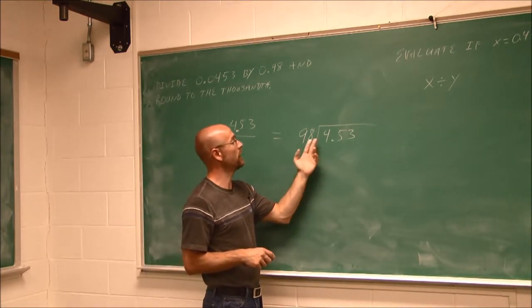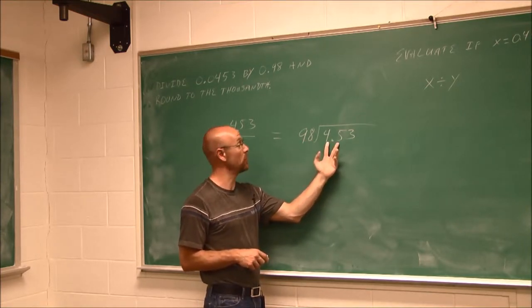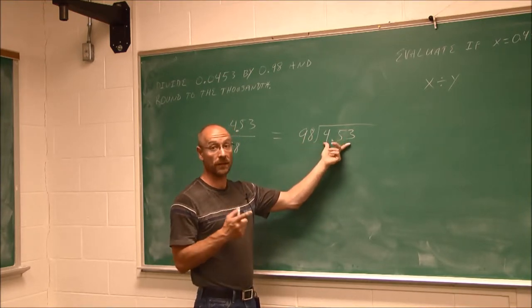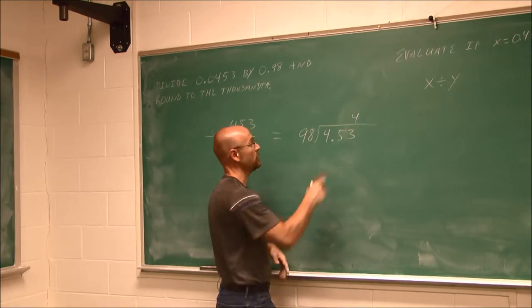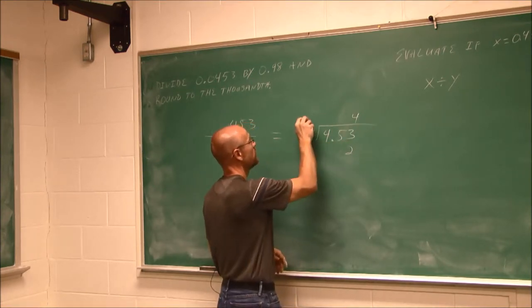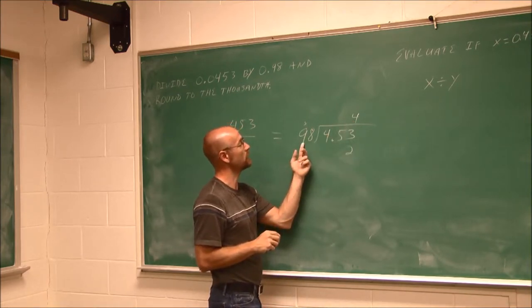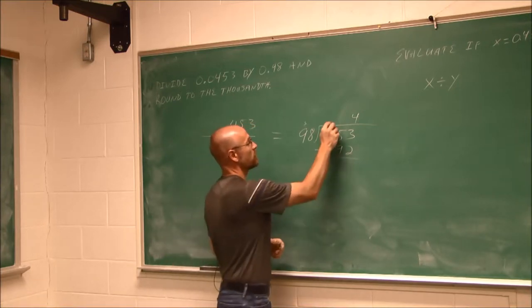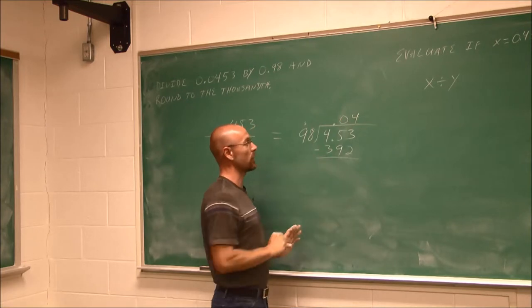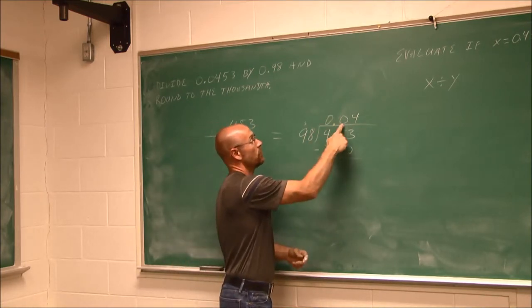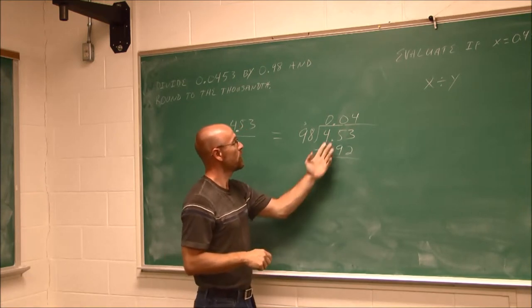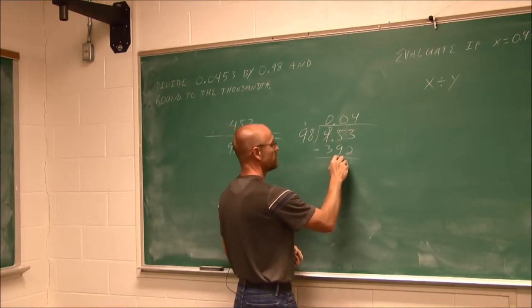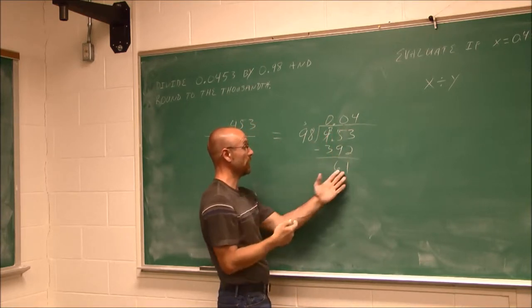Does 98 go into 4? No. Does 98 go into 45? No. Does 98 go into 453? Well, it's pretty close to 100, so I'd say it's going to go in there at least four times. So let's do that multiplication. 4 times 8 is 32, carry the 3. 4 times 9 is 36, and 3 is 39. And now I can do that subtraction. We're not going to worry about this decimal because we've already determined where it goes. We find this difference. 3 minus 2 is 1. I've got to borrow here. 15 minus 9 is going to give me 6, and we get 61.